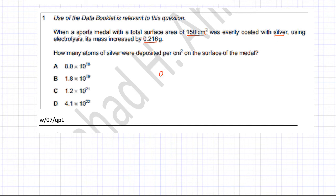We know that 0.216 grams of silver are deposited over an area of 150 centimeter square. The first thing we need to do is find out the mass of silver that would be deposited per centimeter square. So we're going to divide 0.216 by 150, and that equals 1.44 times 10 to the power minus 3 grams of silver per centimeter square.